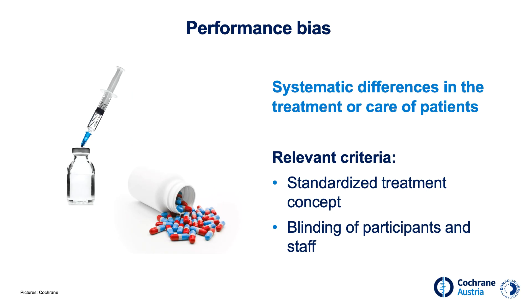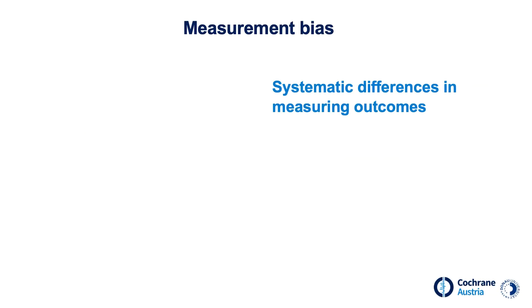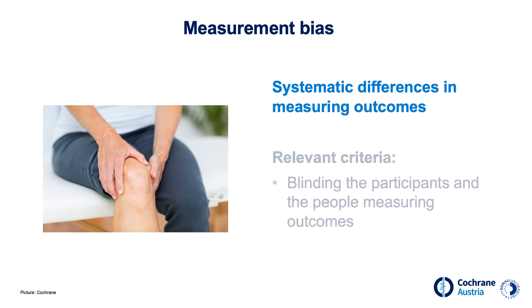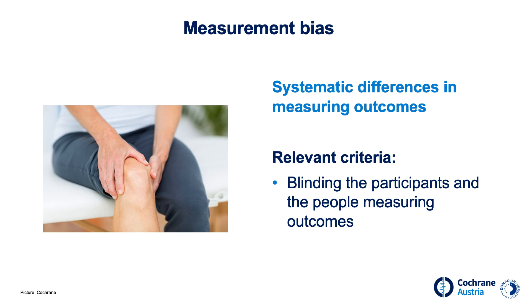Blinding means that the participants in a study are not aware of which people receive which treatment. Measurement bias exists when there are systematic differences in measuring outcomes. For example, if a person evaluates their knee pain, knowing if they were in the intervention or comparison group can influence the perception of the pain. To prevent measurement bias, those who measure the outcomes should not know which individuals received the intervention and which the control intervention, allowing them to assess outcomes unaffected and objectively.